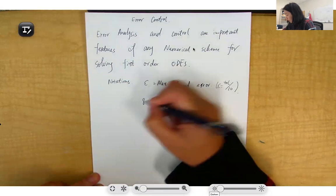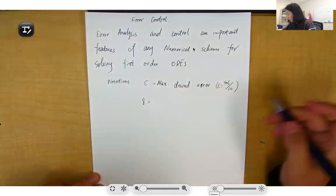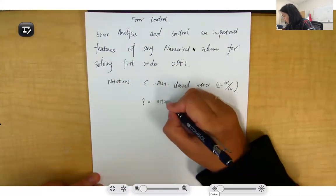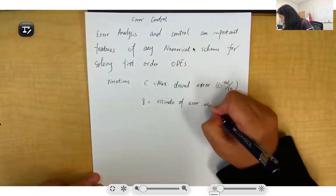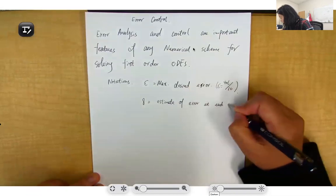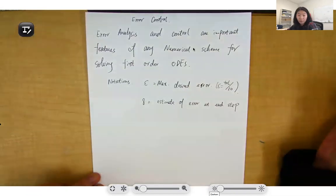Another notation is sigma (σ), which is the estimate of error at each step. Basically it is the local error.